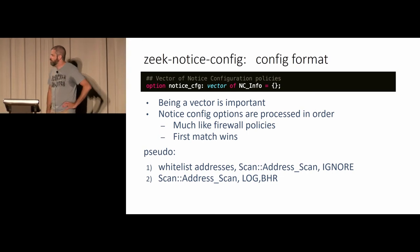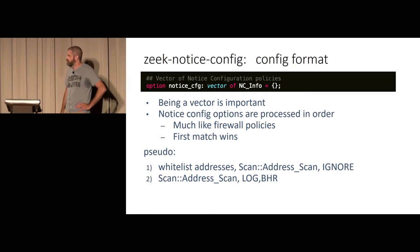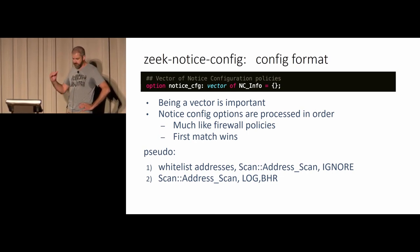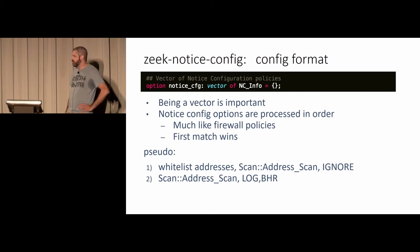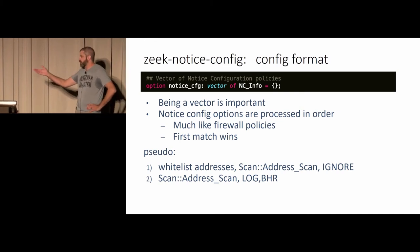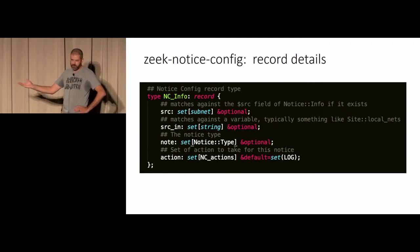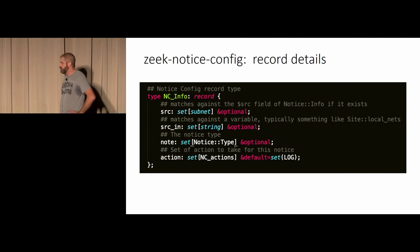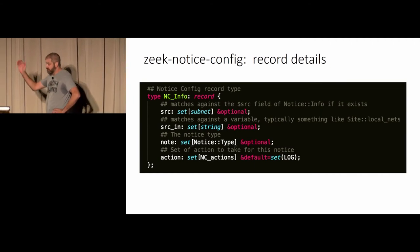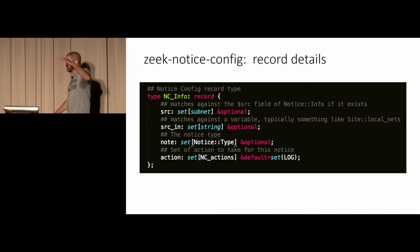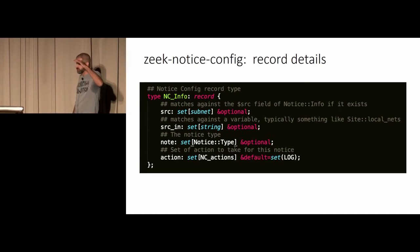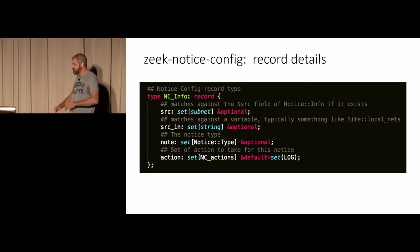The notice config framework is a vector, which is very important, because it works basically just like a firewall — it'll process your policies in order, first match wins. So we can have a whitelist for address scan, ignore it, and while outside the whitelist it would continue on to BHR. Those are all sets, so you don't have to have a notice configuration line for every single notice type — you just add it to the set and you're ready to go.